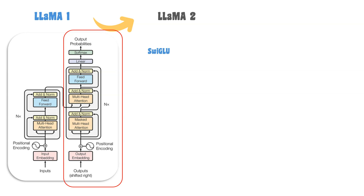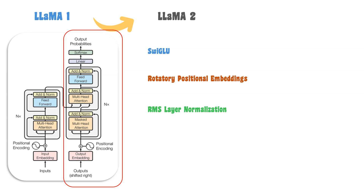In Llama 2, the SwiGLU activation function is used instead of the GeLU activation function. Rotary positional embeddings are used instead of absolute positional embeddings. RMS layer normalization is used instead of standard layer normalization. The context length is increased to 4K tokens. Llama 3 is developed based on the Llama 2 architecture, with some key improvements.